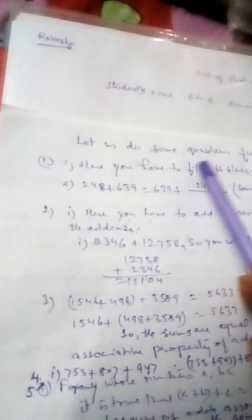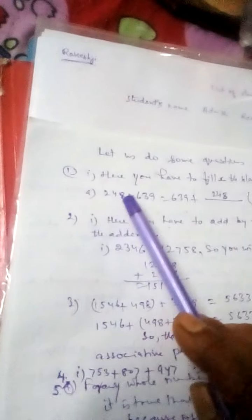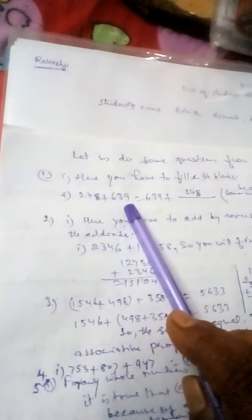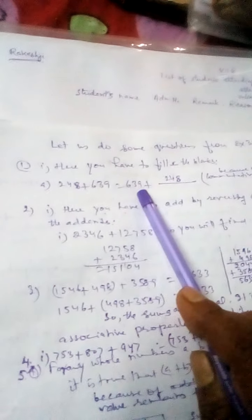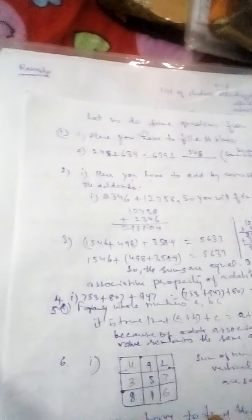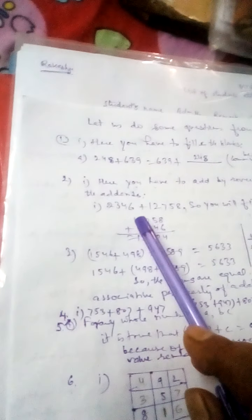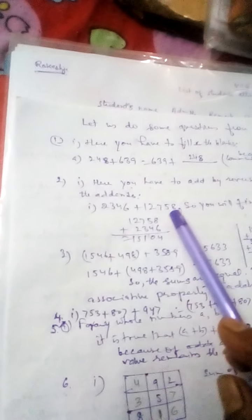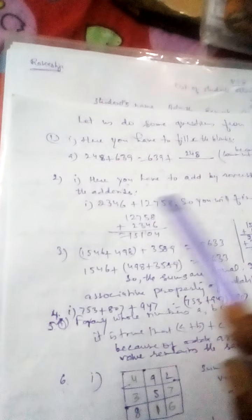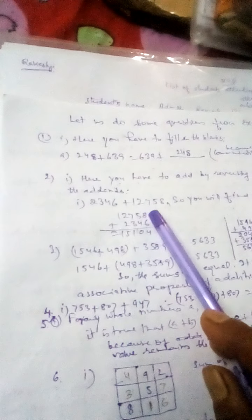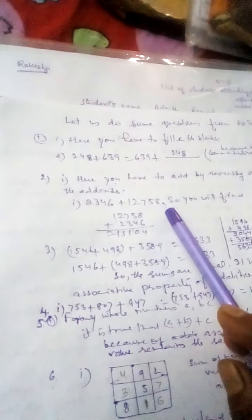Now let us do some questions from exercise 3B. Here you have to fill in the blanks. Like 248 plus 639 will be 639 plus 248. This is because of commutative property of addition. Then you will have to add these numbers by reversing the order of the addends.